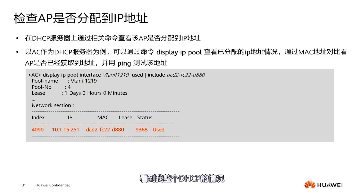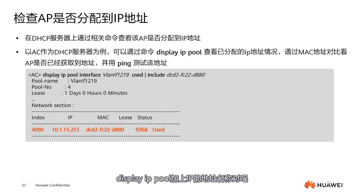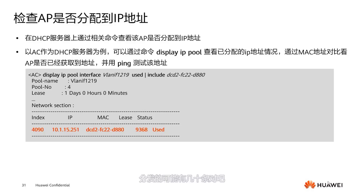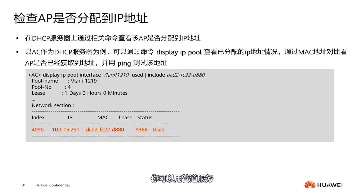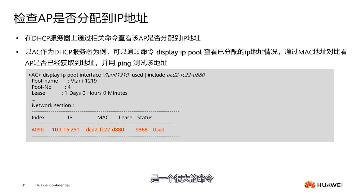Moving on to some commands. The first is display AP global configuration — to see global configuration and whether it is running in standard mode. The second, very commonly used, is display AP unauthorized record. By default it uses MAC address authentication. If you haven't added the MAC address, you can wait for it to come online. Display AP unauthorized means the AP can come online but hasn't been added to the whitelist or list of APs yet — so you can add it directly because its MAC address is already present.